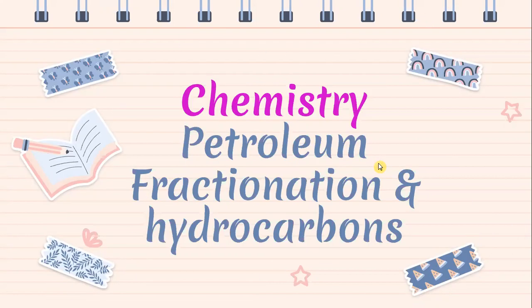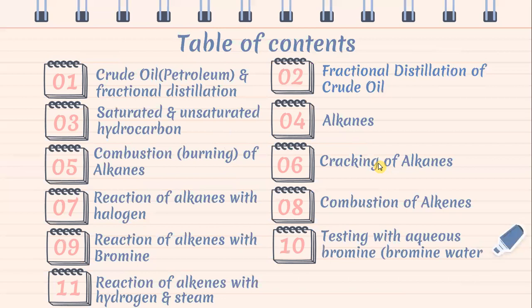Our study outline comprises of crude oil, petroleum, and fractional distillation. Fractional distillation of crude oil, saturated and unsaturated hydrocarbon, alkane, combustion, burning of alkane, cracking of alkanes, reaction of alkane with halogen, combustion of alkanes, reaction of alkane with bromine, testing with bromine water, and reaction of alkane with hydrogen and steam.